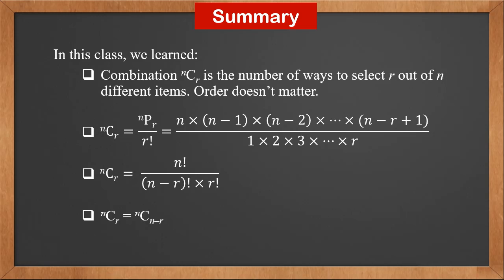nCr is n factorial over n minus r factorial times r factorial. nCr is equal to nC(n minus r). nC0 is 1.